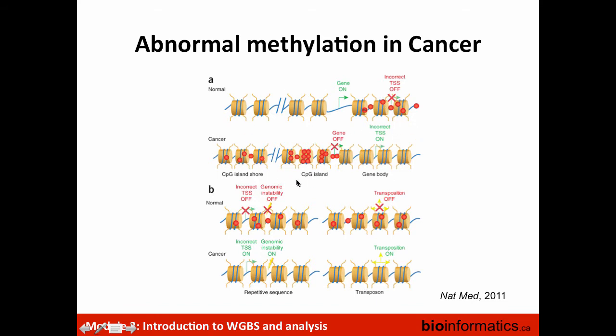Methylation is also typically used to shut down or control transposable elements. In a disease state, you might lose that methylation, which leads to reactivation of repetitive sequences and transposons. That's why we want to profile the chromatin and methylation state, and potentially identify changes between normal and disease states.